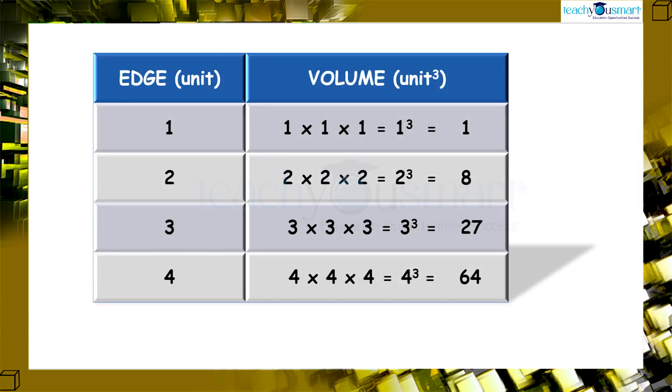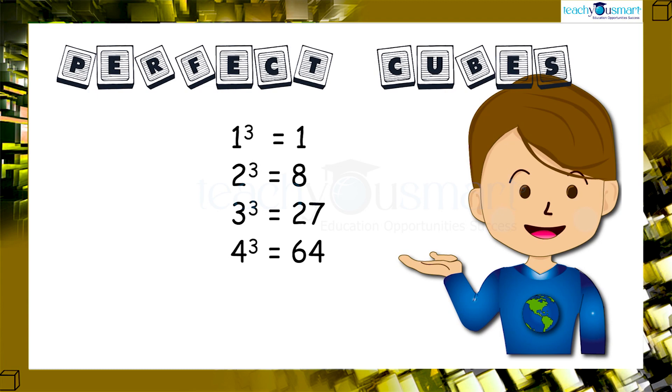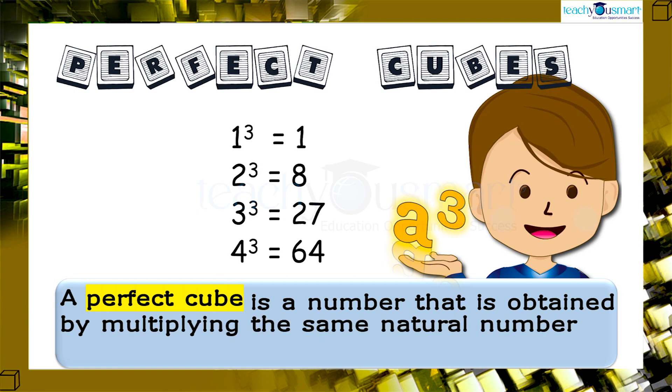Let's tabulate the length of the edges and corresponding volumes. These numbers are the cubes of natural numbers. They are called perfect cubes. That is, a perfect cube is a number that is obtained by multiplying the same natural number 3 times.